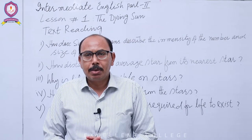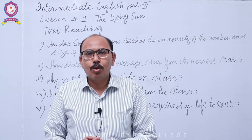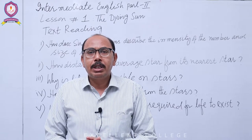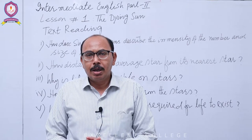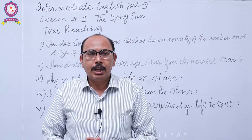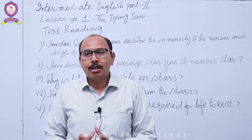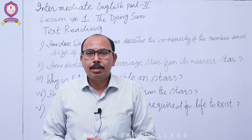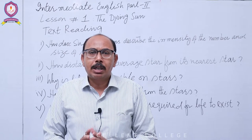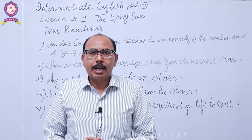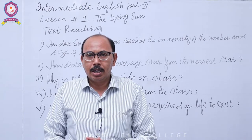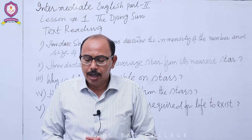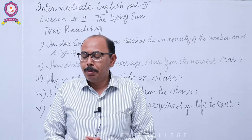جب ہم کہیں گے لاکھوں ستارے تو یہ 'millions of stars' بنے گا — million کو plural کیا، اس کے بعد 'of' لگایا، اور 'stars' بھی plural کیا۔ یہ common errors ہیں جو طالب علم کرتے ہیں۔ آپ نے سارا question اچھے طریقے سے یاد کیا ہوتا ہے لیکن اس چھوٹی سی غلطی کی وجہ سے کم از کم ایک mark ضائع ہو جاتا ہے۔